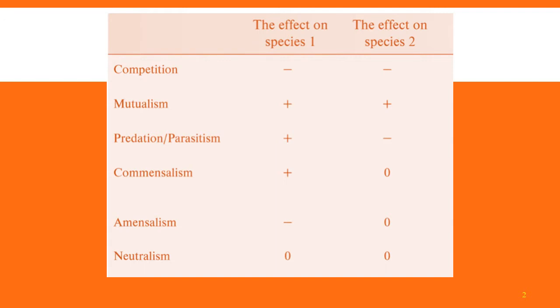When we look at mutualism, both species will be benefiting from what's going on. It could be a sunflower being pollinated by a bee — the sunflower is spreading its genes and the bee is getting some food. So they're both benefiting.